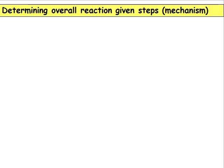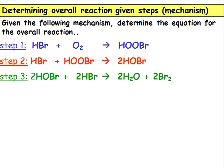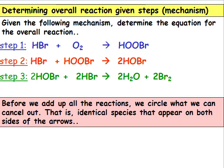If we're given the steps in a reaction mechanism, we can use them to write the equation for the overall reaction. We'll use this mechanism as an example. Before we add up all the reactions, we circle the species that we can cancel out. That is, identical species that appear on both sides of the arrows.